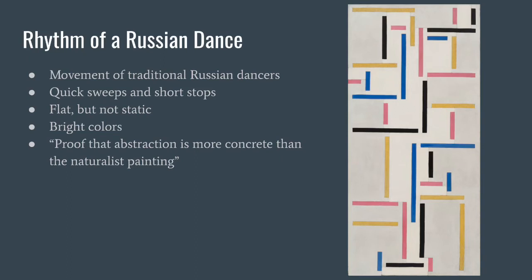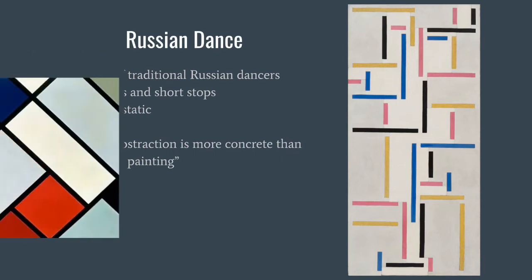Theo is quoted as describing his painting as proof that abstraction is more concrete than a naturalist painting, saying this because it depicts the mental constructs behind the idea of a thing.